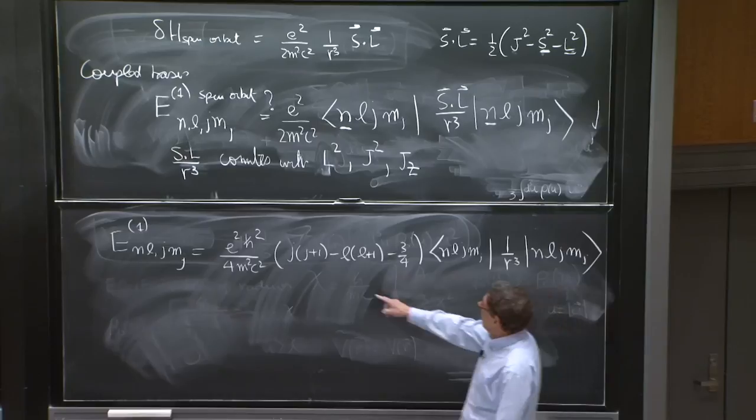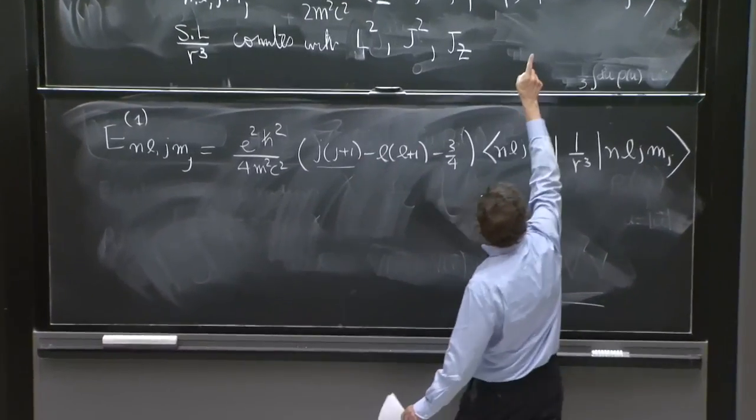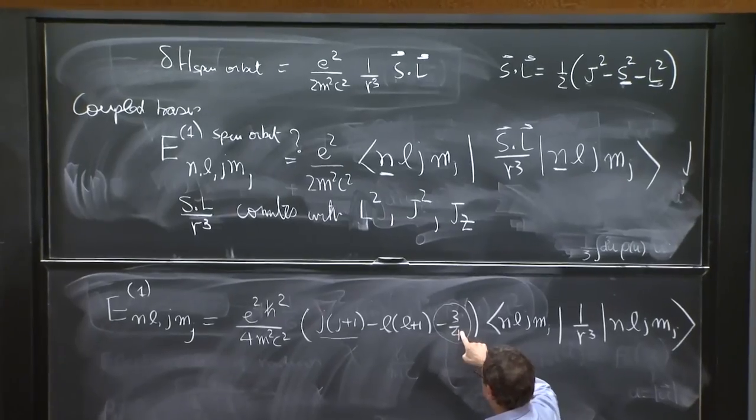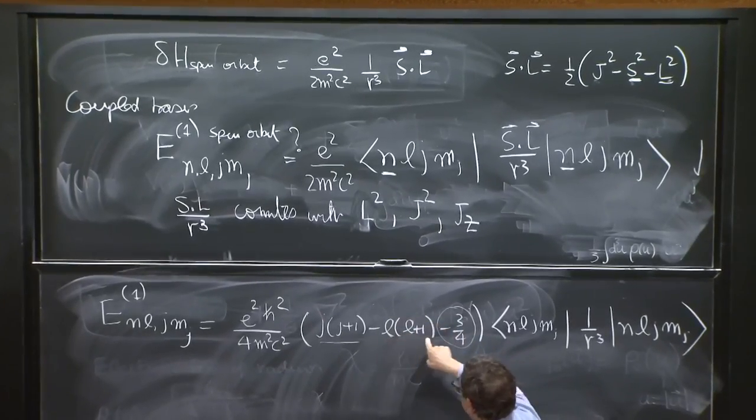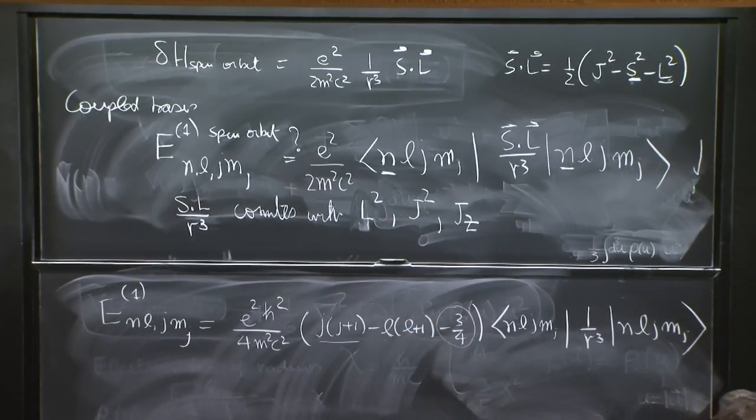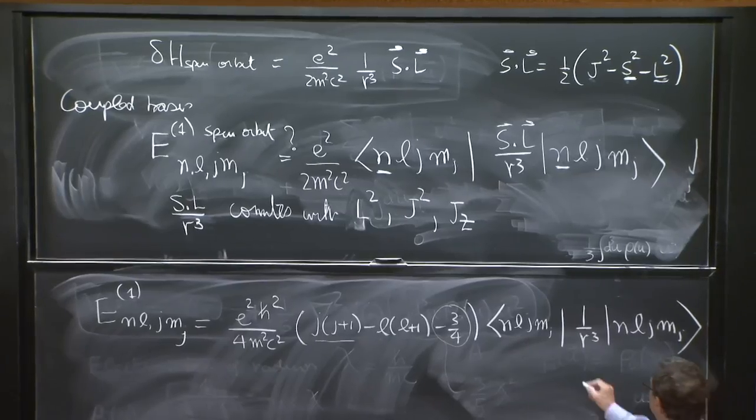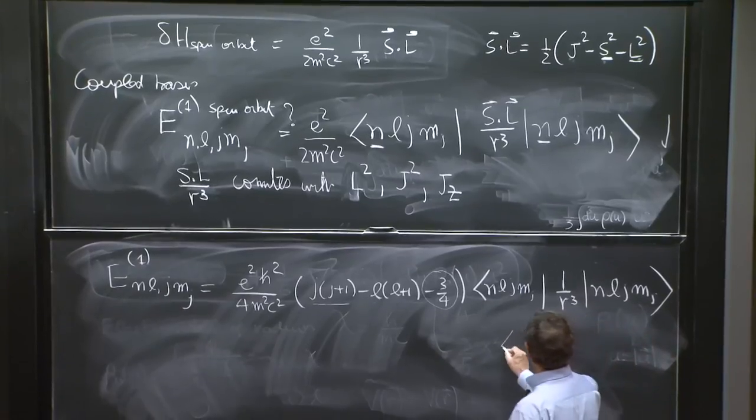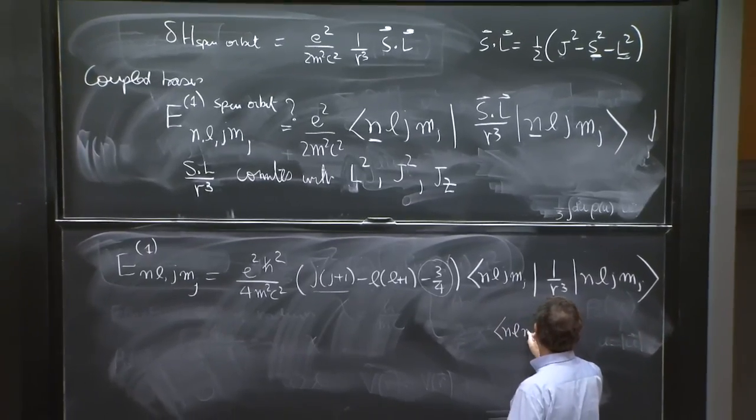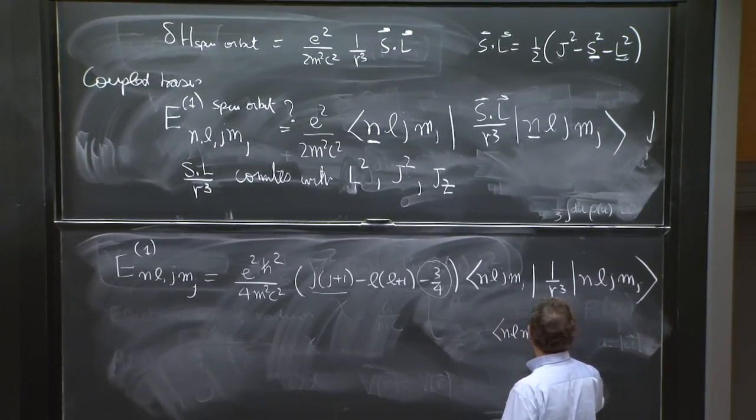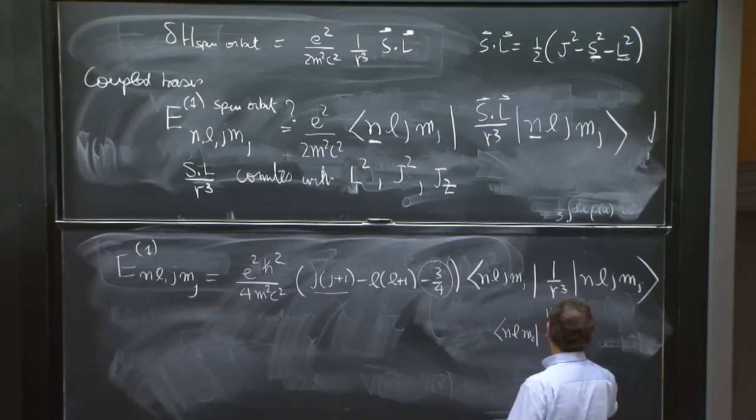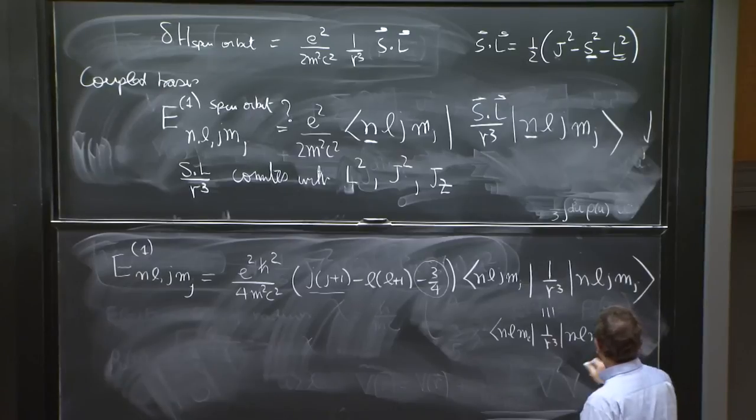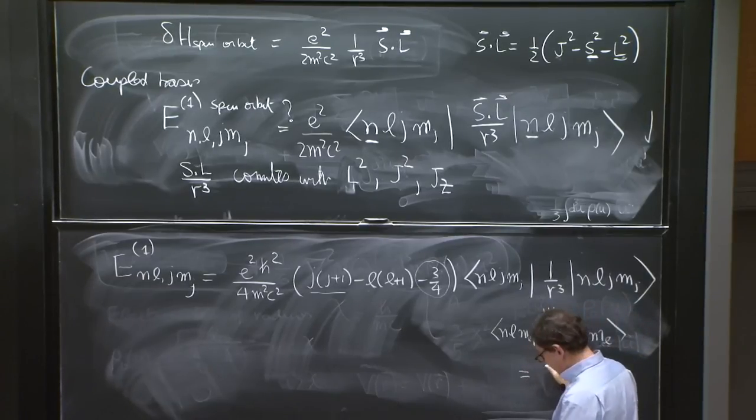That should be clear from the fact you have j squared minus s squared. That's a 3 quarters, spin is always 1 half, and l squared. This is known. It's equal, in fact, to n l m l, 1 over r cubed n l m l.